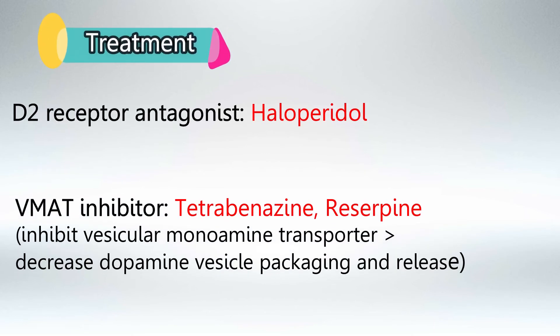To treat Huntington's disease, we use D2 receptor antagonists like haloperidol, and we also use vesicular monoamine transporter inhibitors, which are tetrabenazine and reserpine.